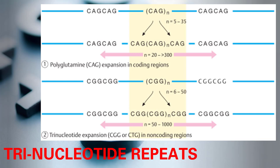One classical disorder is Huntington's disease. Note that the number of repeats may expand in subsequent generations — known as anticipation — which is associated with increased severity and possibly an earlier onset of the disease, as in the case of Huntington's disease.